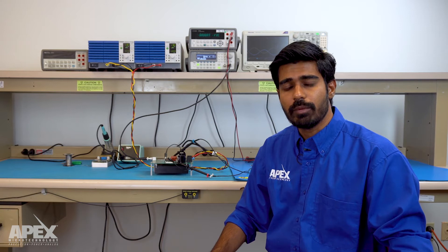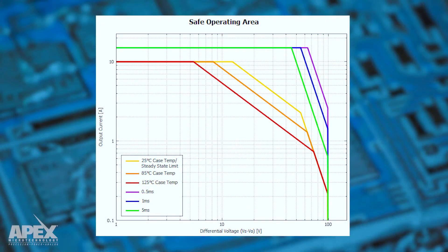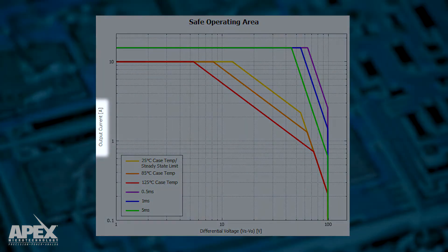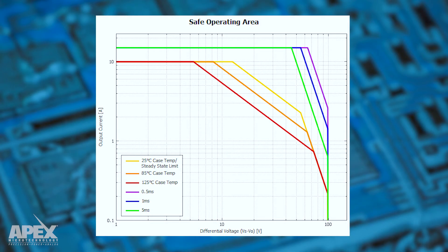The SOA curves show the maximum power handling capability of power operational amplifiers. A typical SOA graph looks something like this. The vertical axis represents the output current of the amplifier and the horizontal axis represents the voltage stress across the conducting device at the output stage of the amplifier.